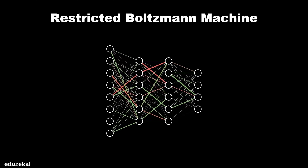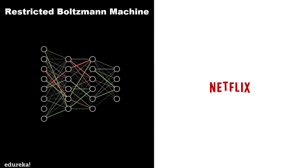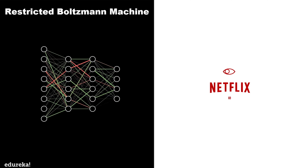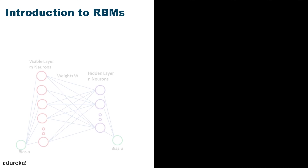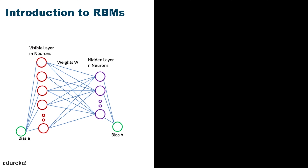Restricted Boltzmann Machine is an undirected graphical model that plays a major role in deep learning frameworks today. It was initially introduced as Harmonium and gained big popularity in recent years in the context of the Netflix Prize, where RBMs achieved state-of-the-art performance in collaborative filtering and beat most of the competition. Many hidden layers can be learned efficiently by composing Restricted Boltzmann Machines, using the feature activations of one as the training data for the next.